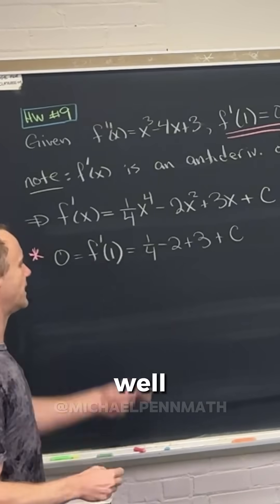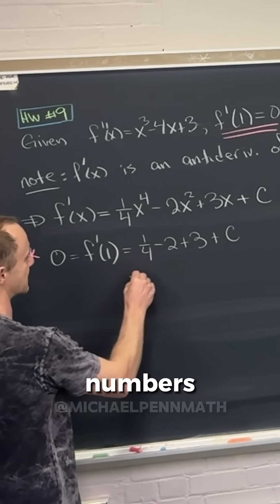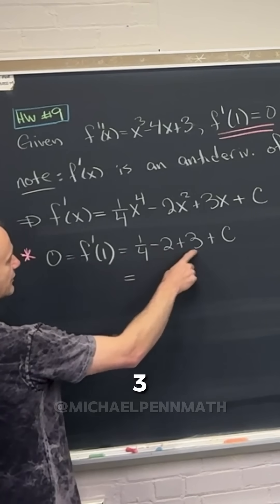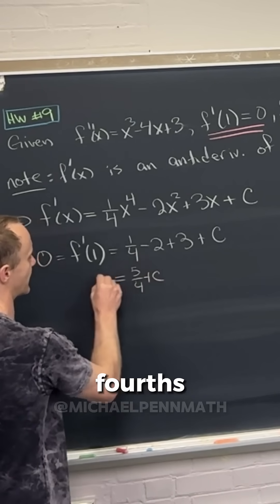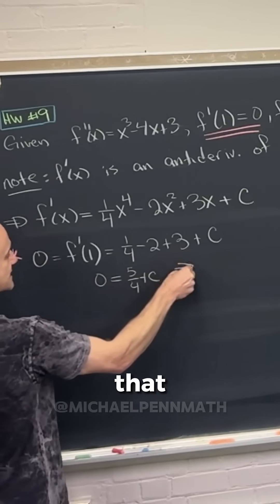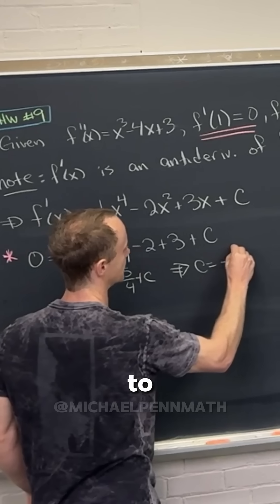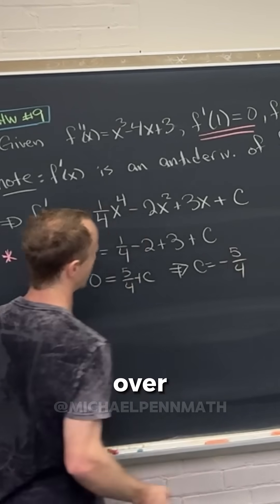Now we can add these numbers together: three minus two is one, plus a quarter is five fourths. So we have five fourths plus c equals zero. That tells us that c is equal to negative five over four.